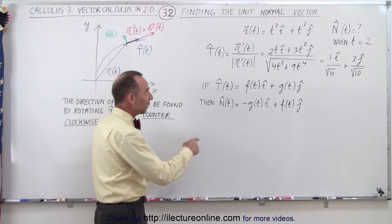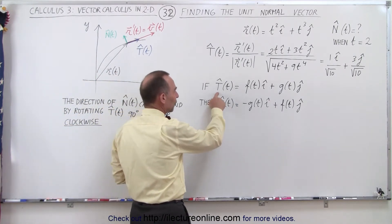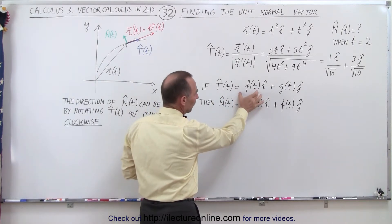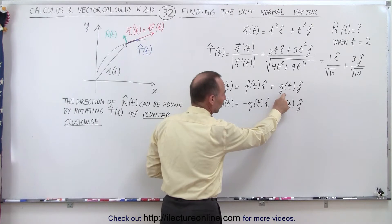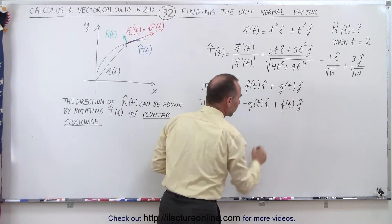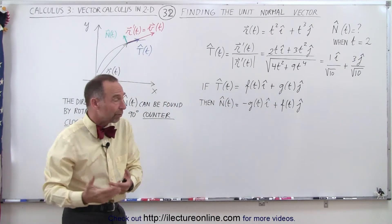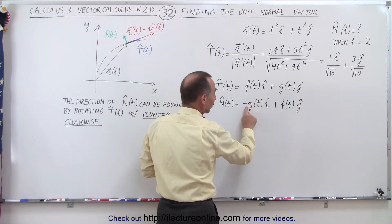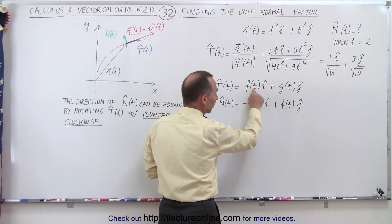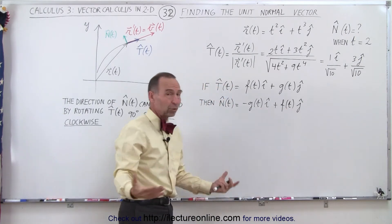If the unit tangent vector is some function of the parametric variable t in the i direction plus another function of t in the j direction, then to find the unit normal vector, take the negative of the first function and place it in the i direction, and the positive of the second function in the j direction. So it's quite straightforward.